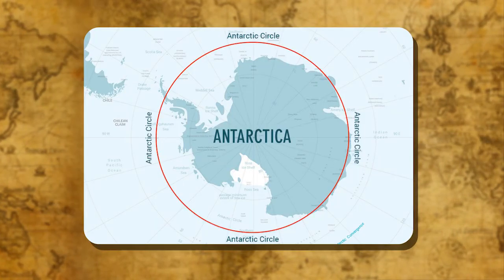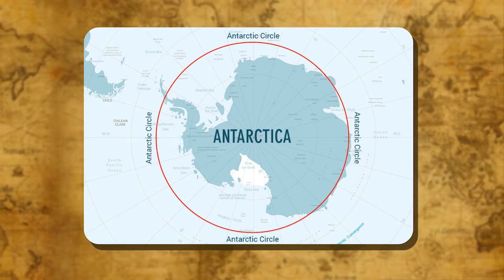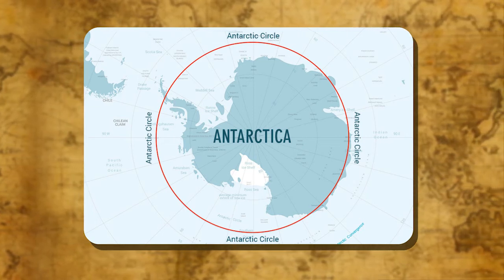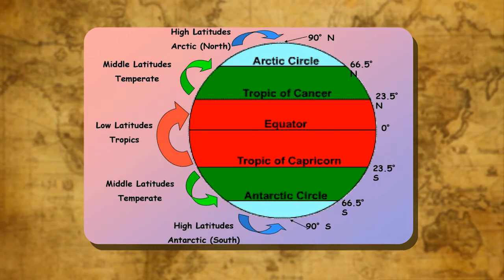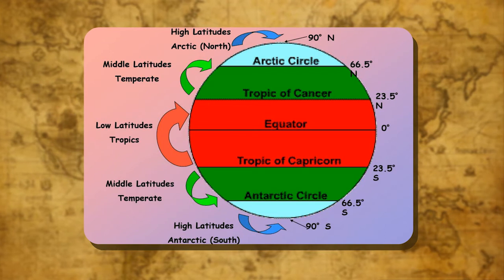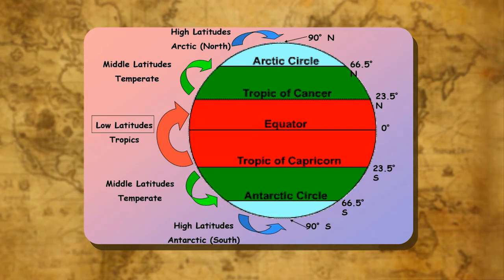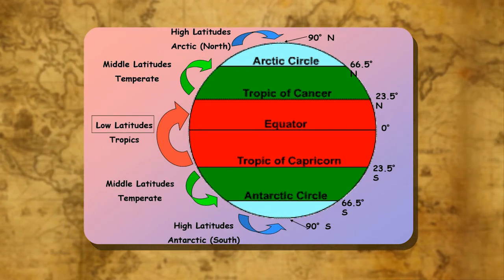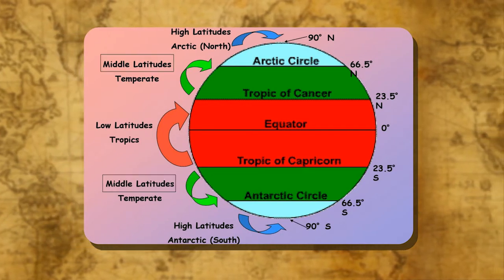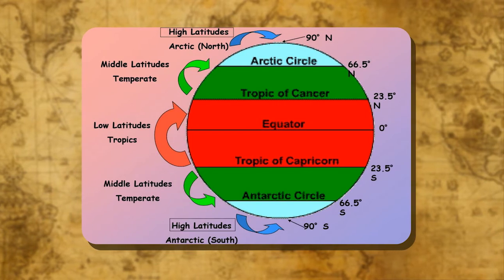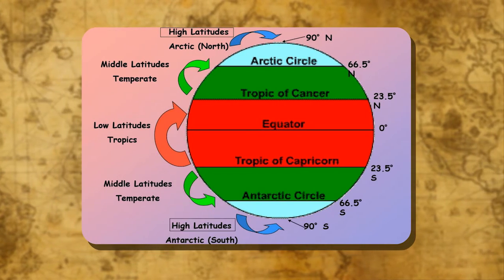Antarctic Circle: The parallel of 66 and a half degrees south is known as the Antarctic Circle. For the sake of convenience, the regions which lie between the equator and 30 degrees are known as low latitudes, those between 30 degrees and 60 degrees as mid-latitudes, and those between 60 degrees and the poles are referred to as high latitudes.